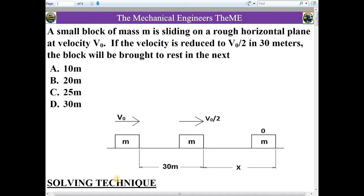First, I will read the question. A small block of mass M is sliding on a rough horizontal plane at velocity V0. If the velocity is reduced to V0/2 in 30 meters, the block will be brought to rest in the next: A) 10 meter, B) 20 meter, C) 25 meter, D) 30 meter.